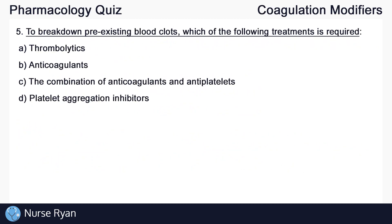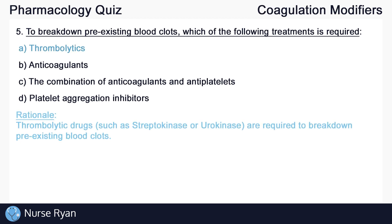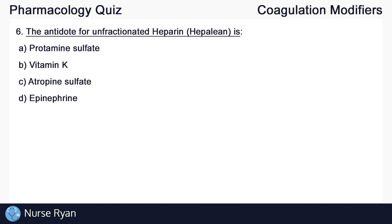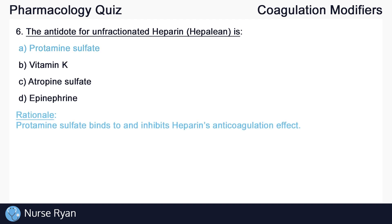Question number five: To break down pre-existing blood clots, which of the following treatments is required? The answer is A, thrombolytics. Thrombolytic drugs are required to break down pre-existing blood clots. Question number six: The antidote for unfractionated heparin is? The answer is A, protamine sulfate. Protamine sulfate binds to and inhibits heparin's anticoagulation effect.